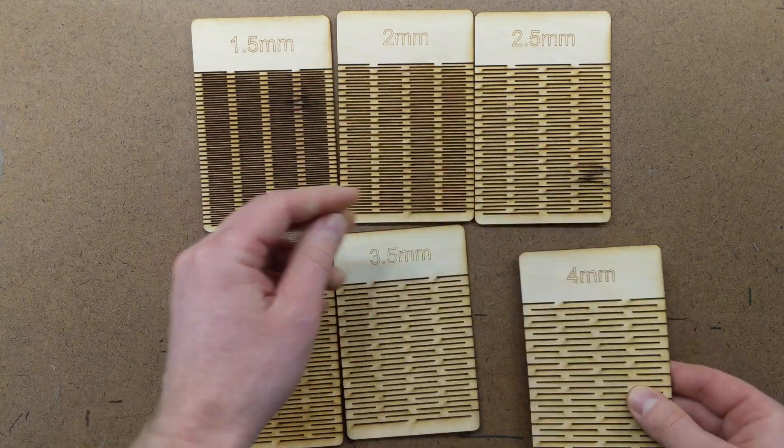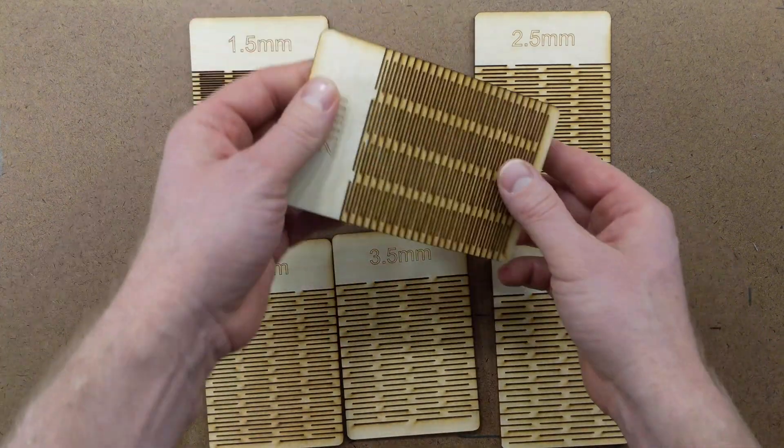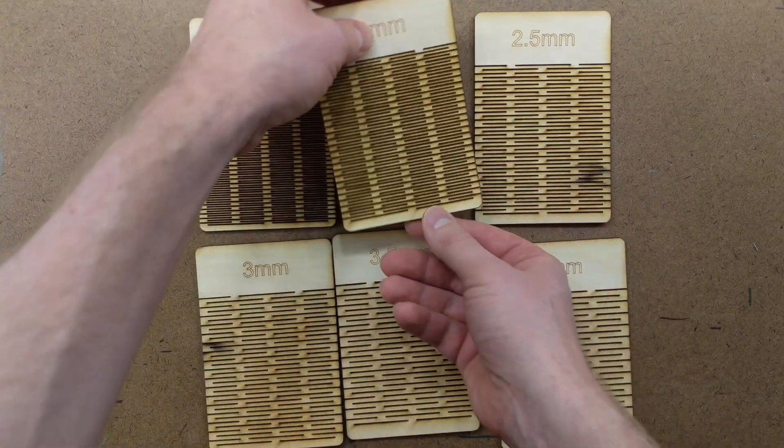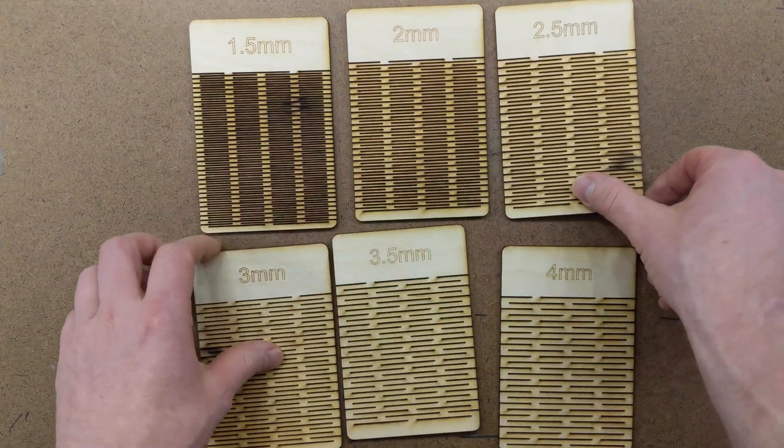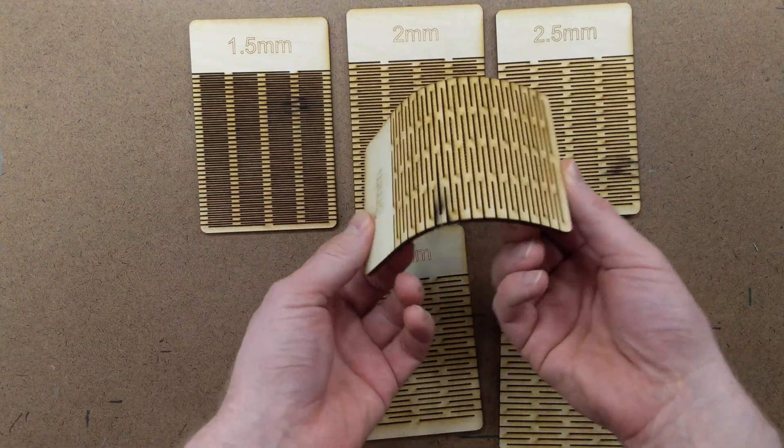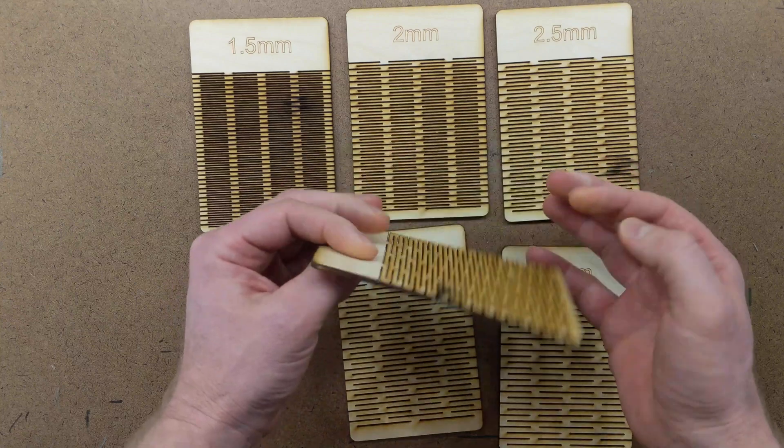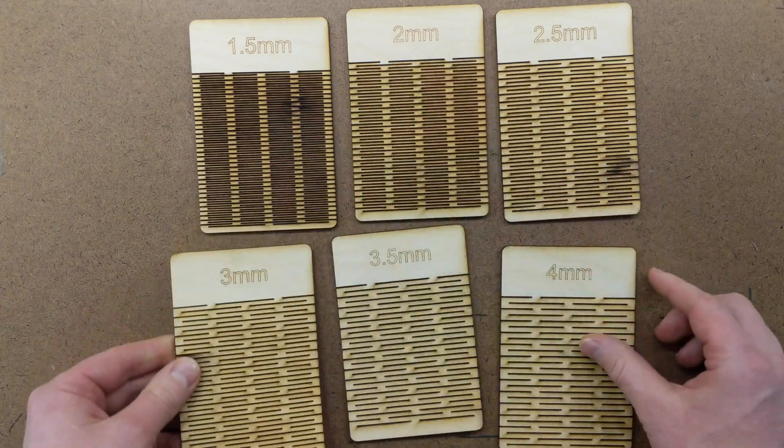That's why you need to make swatches so you can test out different cut distances on your material. I've included this sample swatch file as a link in the description so you can cut out materials that you're using for your laser cutter and then we can put these parameters into Fusion 360 and design them for our cuts.